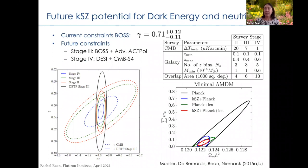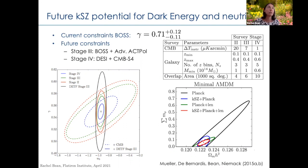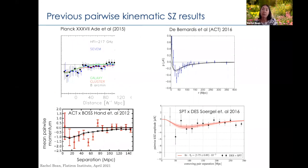A few years ago, Eva-Maria Müller — a graduate student now a postdoc at Oxford — Francesco de Bernardis, and Mike Niemack did some forecasting work on the potential of this approach using stage-three and stage-four surveys. We found this was a very nice complementary way to test the growth rate and constrain neutrino masses compared to other techniques using redshift-space distortions of galaxy clustering. If we can understand the mass bias and get measurements of the optical depth, there is potential to get some very nice underlying dark sector physics.